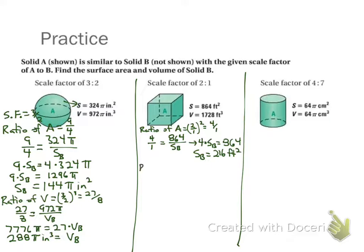For volume, I'm now going to take my scale factor and cube it. So that's 2 over 1 cubed, and I get 8 over 1. So now it's going to be 8 over 1 equals, I know volume of B goes on the bottom, that's 1728 on top. I get 8 times the volume of B equals 1728. I divide 1728 by 8, and it comes out to be 216 feet cubed.